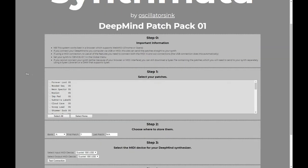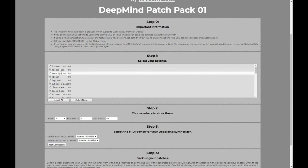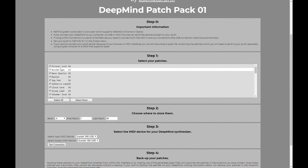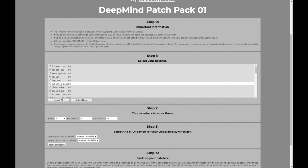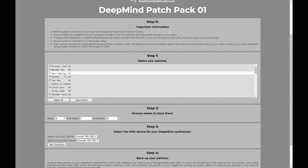Step one here is to pick the patches that you want. Hopefully you've listened to the patches in the patch pack and think they're all wonderful, in which case you can hit select all. If you found some that you didn't really like — say you weren't such a big fan of Subterra Lake or Scoop Lead — you can take those out of the patch pack. You can set it up to contain only the patches that you want.